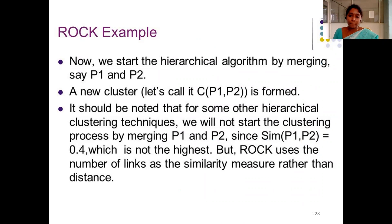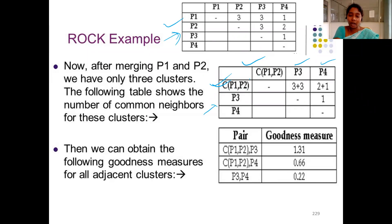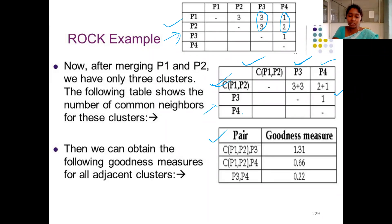Next, I need to reform the table — redraw it with the new cluster. P1 and P2 now form one cluster, and the remaining points are P3 and P4. We already have the link matrix for this. For the updated matrix, P1 and P2 together as a cluster — the link between this cluster and P3 is computed by adding the respective link values. Similarly for P4. This generates the new matrix, from which we can calculate the goodness of measure for each new combination.